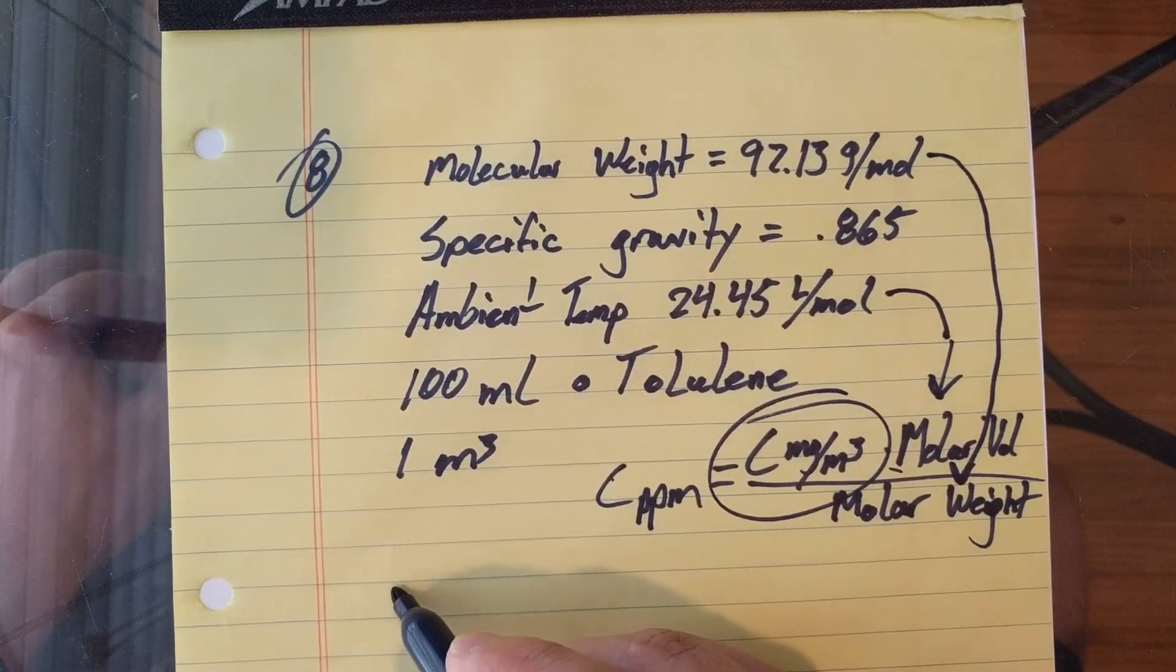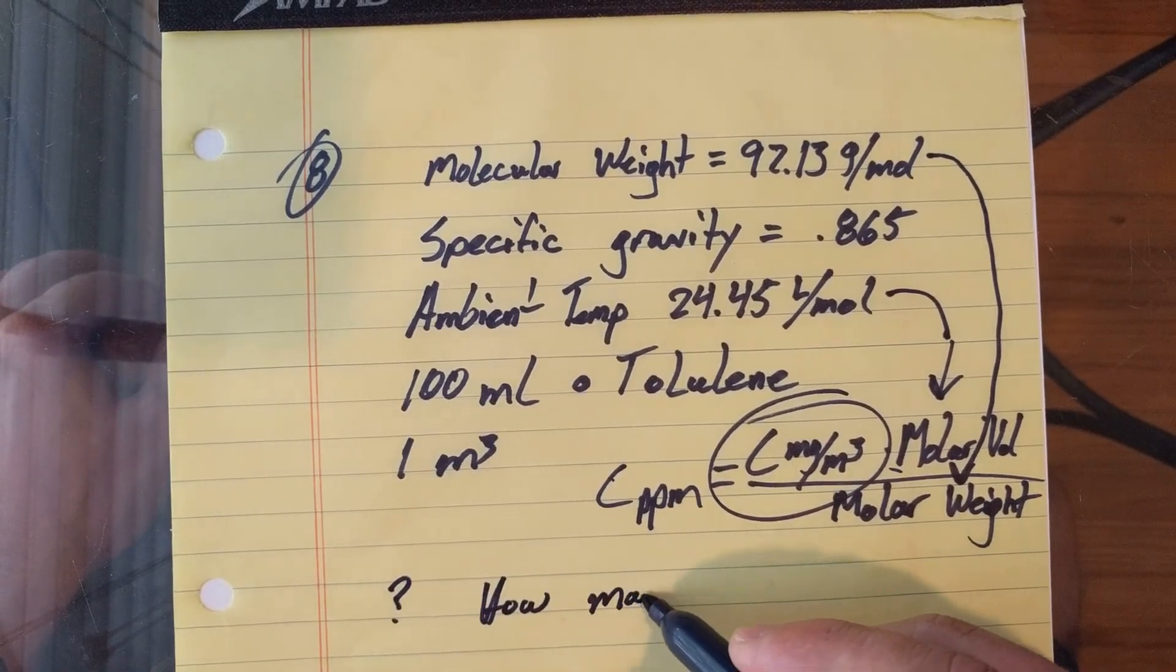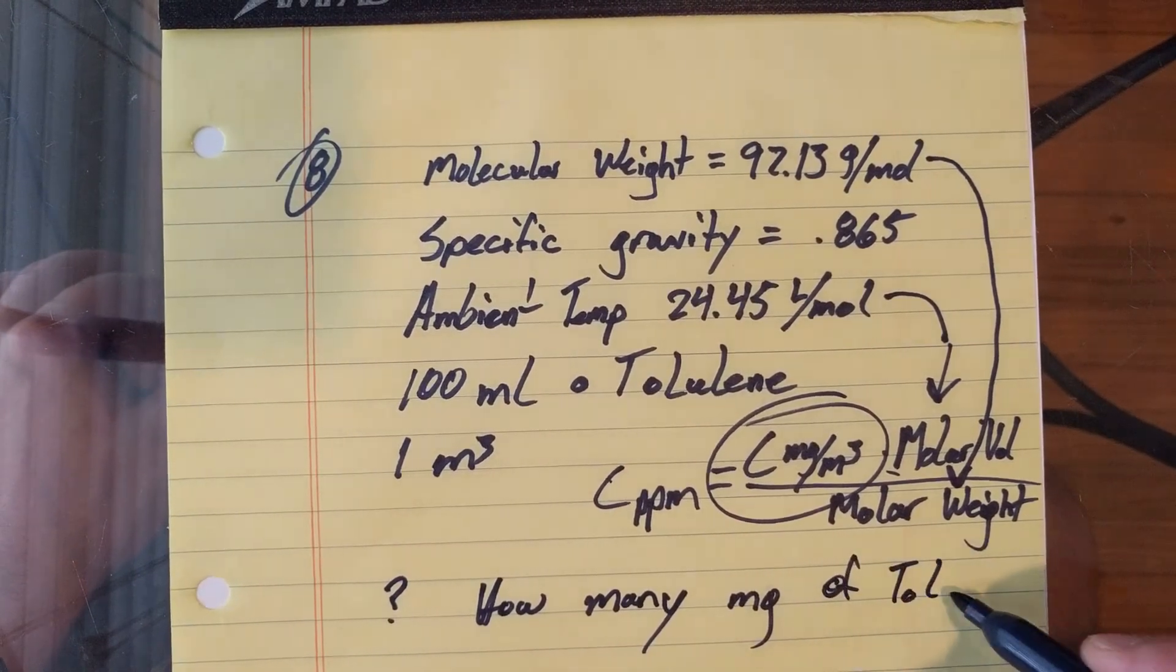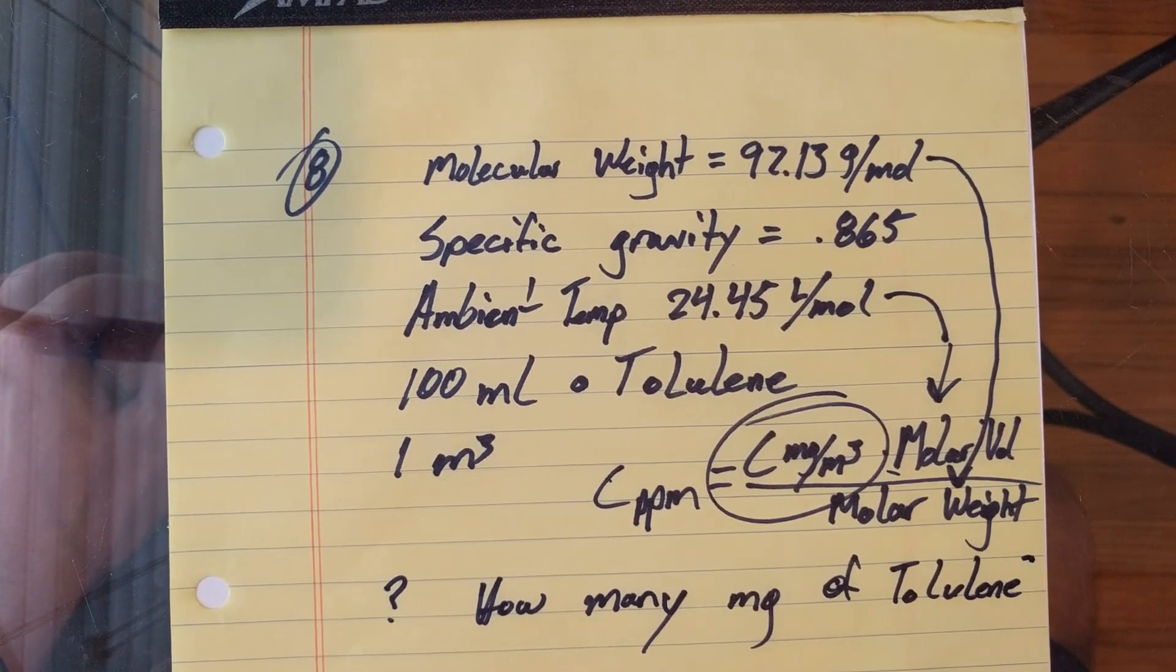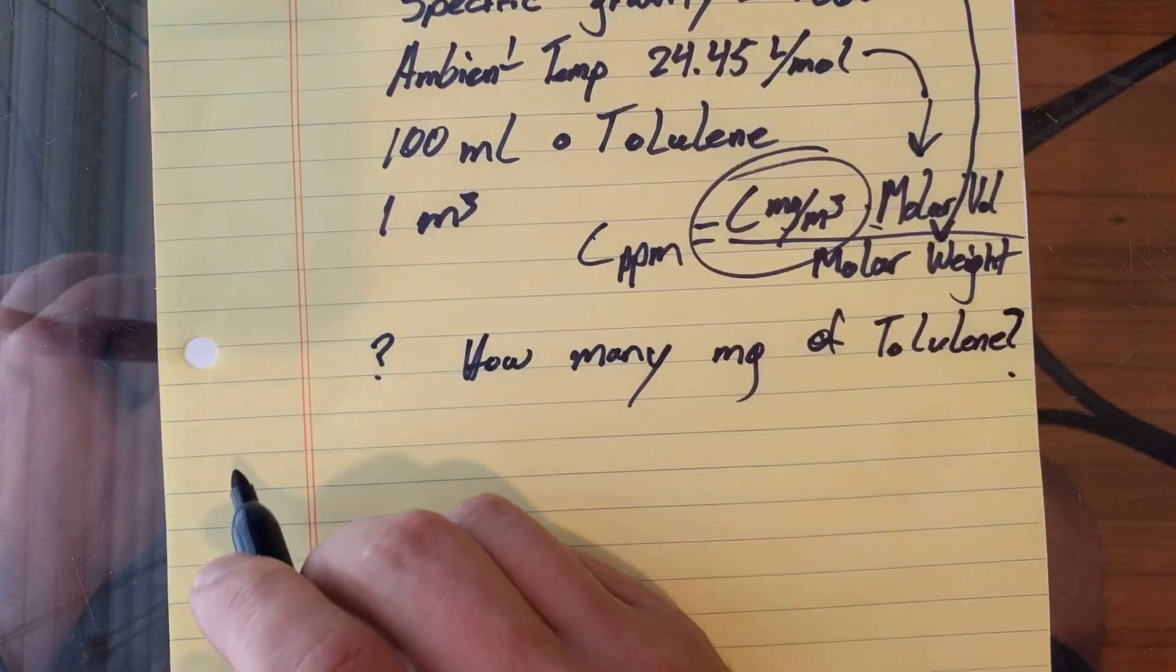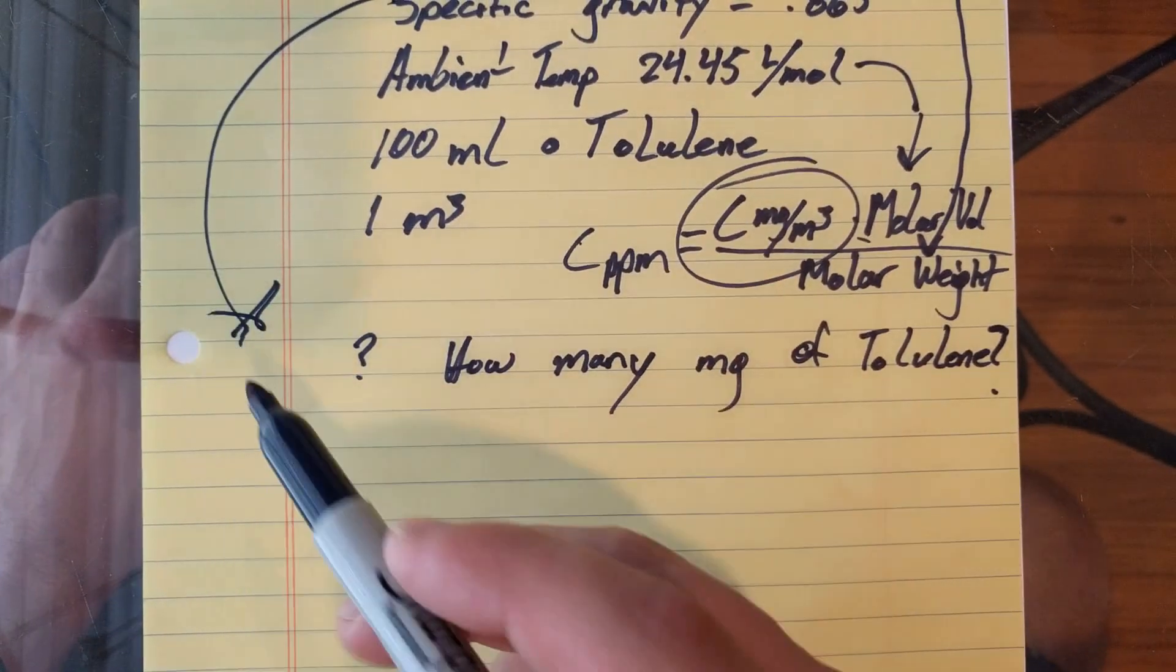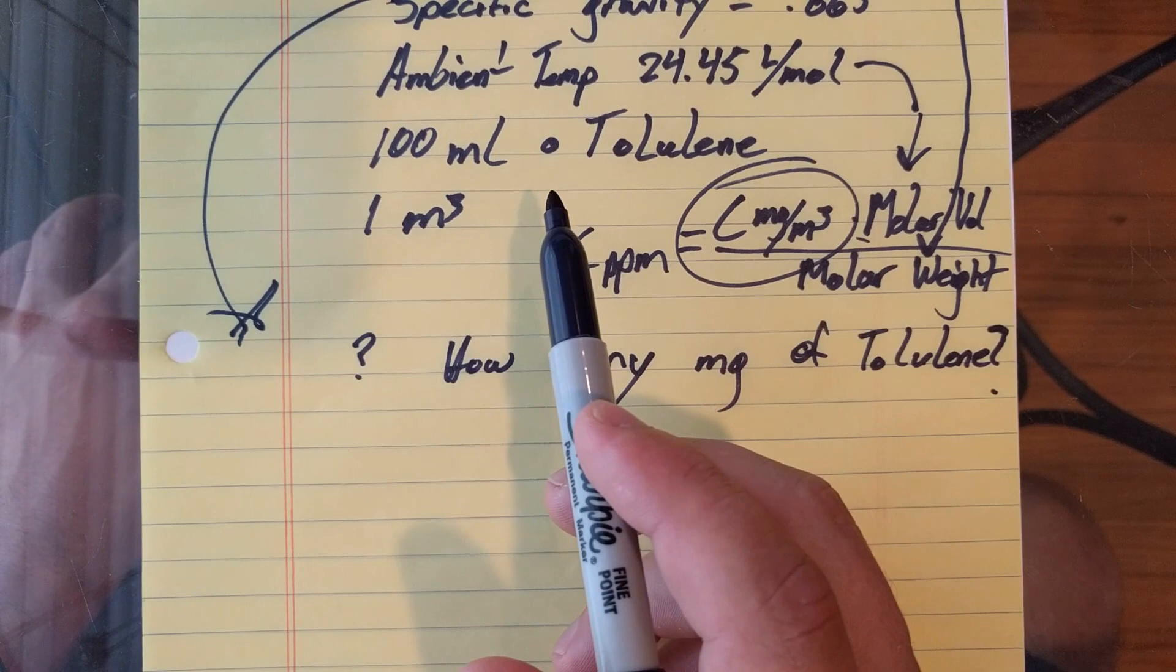So that means that we need to know how many milligrams of toluene we have. In order to do that, we need a conversion factor. Well, that's our specific gravity right here. Specific gravity is the way that we find the density of something.